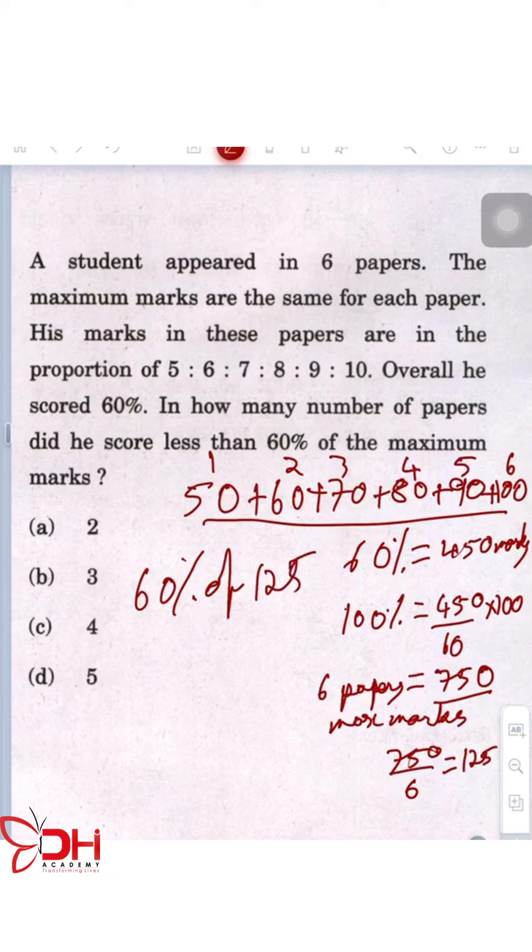Now the question here is in how many papers did he score less than 60% of the maximum? So 60% is 75 marks. Now you need to see in which papers has he scored less than 75. So you have paper 1, paper 2, and paper 3. So in total, 3 papers.